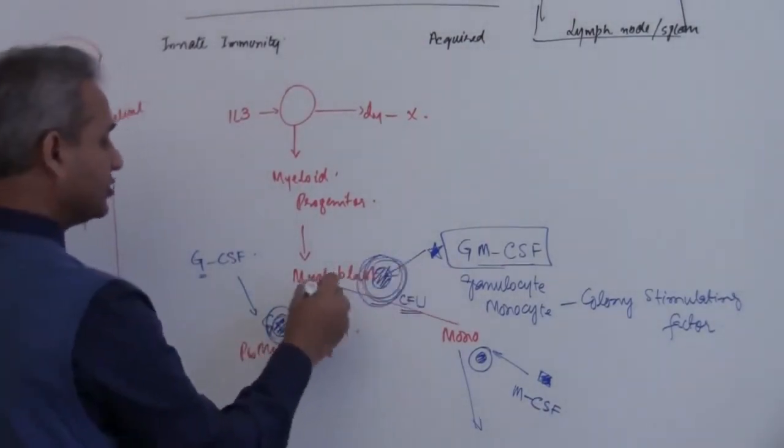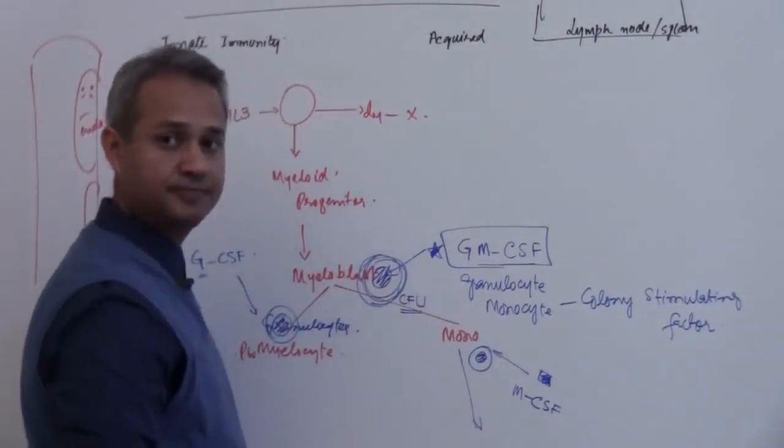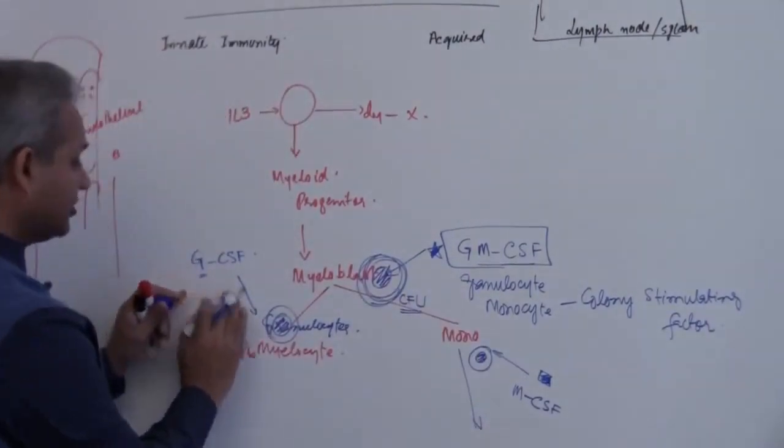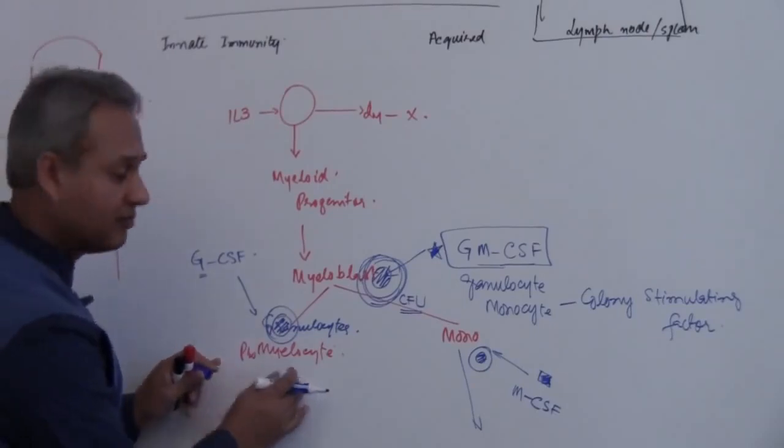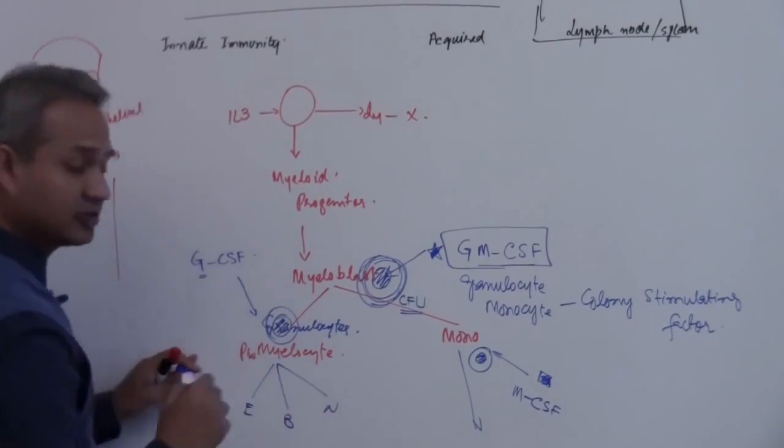So GM-CSF is going to act on a cell which is going to increase granulocytes and monocytes. G-CSF is going to act on a cell which would only make more granulocytes. What does that mean? More eosinophils, more basophils, more neutrophils.